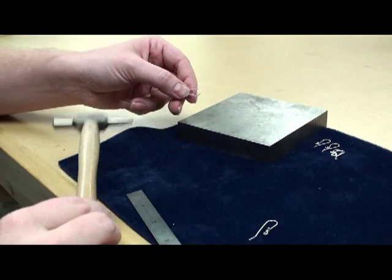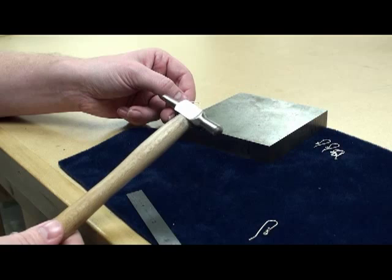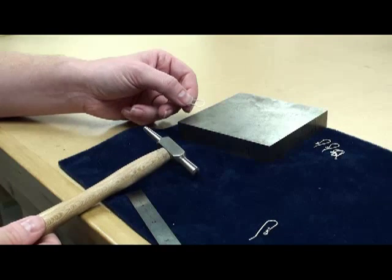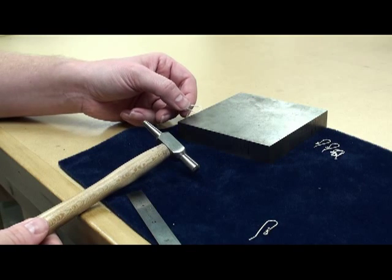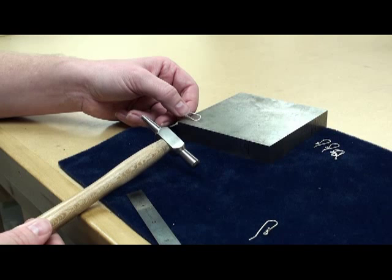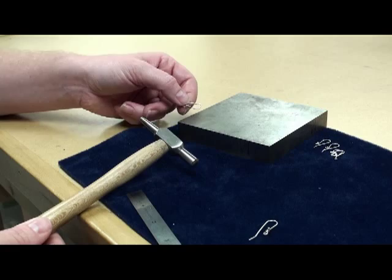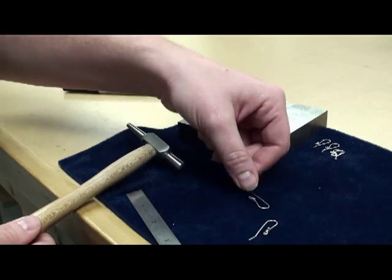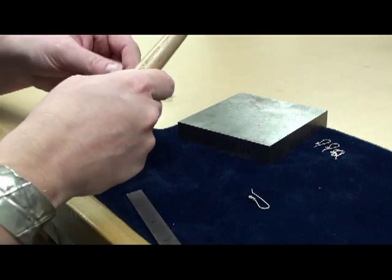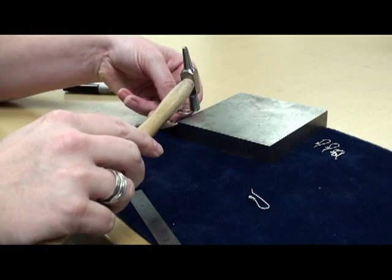Now, another thing that you can do to harden your wire is, rather than take a steel hammer, which is going to reshape and stretch your metal, you can actually take a nylon hammer, a rawhide hammer, something like that. And that's also going to give your metal some more strength and become a little bit more hard.